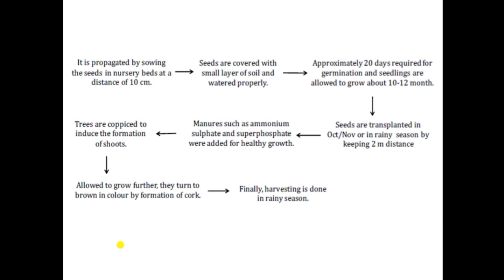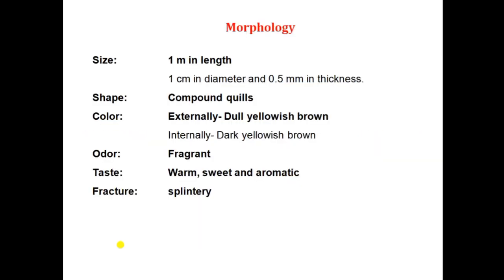Then allowed to grow further, which results in the formation of brown color. Once it is converted into the brown color, it indicates the formation of the cork. Cork is finally harvested in the rainy season. If dried, it converts into quilling — either single quill or compound quill. Smaller quills get inserted into larger quills, and if the thickness measures 0.5 mm, it is good quality cinnamon. Finally, it is harvested, packed, and marketed in the form of bundles.